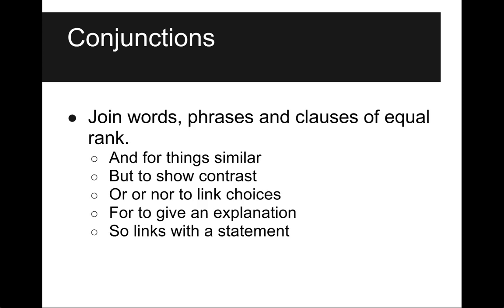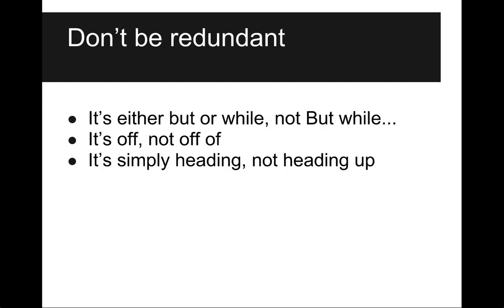Conjunctions join words, phrases, and clauses of equal rank. 'And' is for things that are similar; 'but' shows contrast. 'Or' or 'nor' link choices. 'For' gives an explanation and 'so' links with a statement. Don't be redundant — it's either 'but' or 'while,' not 'but while.' It's 'off,' not 'off of.' It's simply 'heading,' not 'heading up.' All righty then. Thank you.